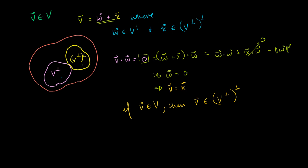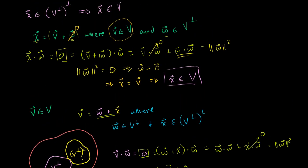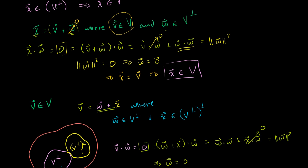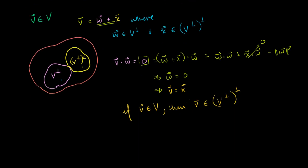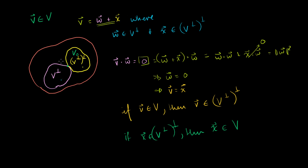So we've proved it both ways. We proved that if you're a member of the orthogonal complement of the orthogonal complement, you're a member of the original subspace. And we just proved that if x is a member of our subspace, then x is a member of V⊥⊥. So these two things are equivalent — anything in the subspace is a member of V⊥⊥, and anything in V⊥⊥ is a member of our subspace. Therefore, our subspace V and V⊥⊥ are the same set, and of course V⊥⊥ overlaps with its orthogonal complement V⊥ only at the 0 vector.